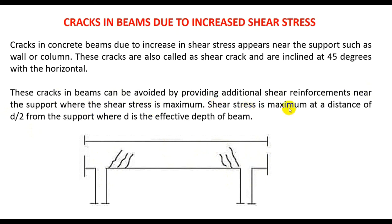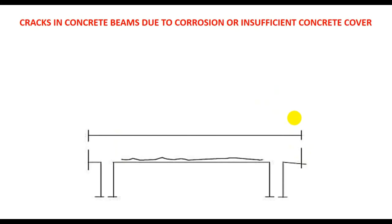These cracks can be avoided by providing additional shear reinforcement near the support where the shear stress is maximum. The shear stress is maximum at a distance of D/2 from the support, where D is the effective depth of the beam. We have to provide maximum stirrups or shear bars within half the effective depth of the beam to prevent shear cracks.